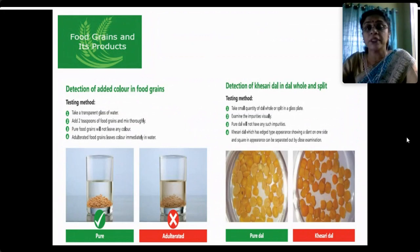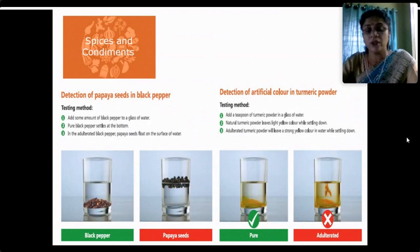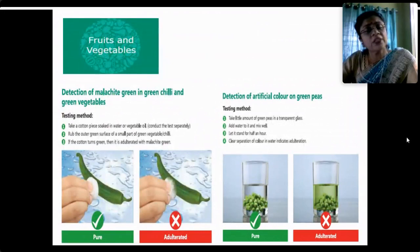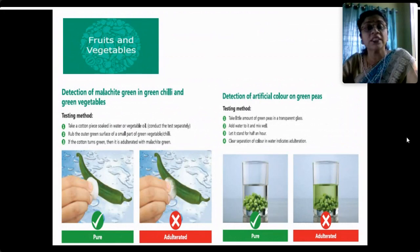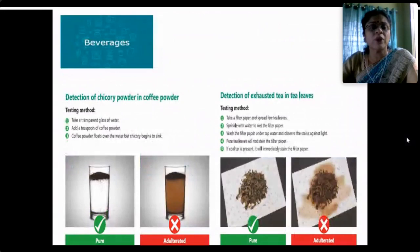To detect kesari dal: examine a quantity of dal in a plate visually — kesari dal has a distinctive edge-type appearance with a slant on one side and can be separated for closer examination. To detect papaya seeds in black pepper: take black pepper in a glass of water — pure black pepper sinks to the bottom, while adulterated black pepper with papaya seeds will float on the surface. For turmeric powder: adulterated turmeric leaves a strong yellow color in water while settling, whereas pure turmeric stays settling down without strongly coloring the water.